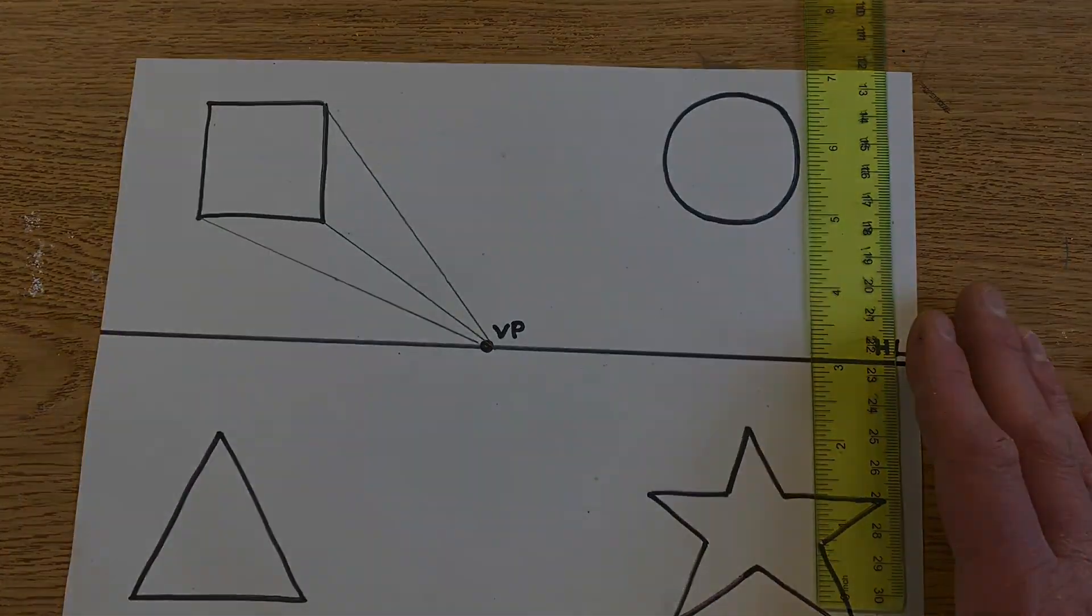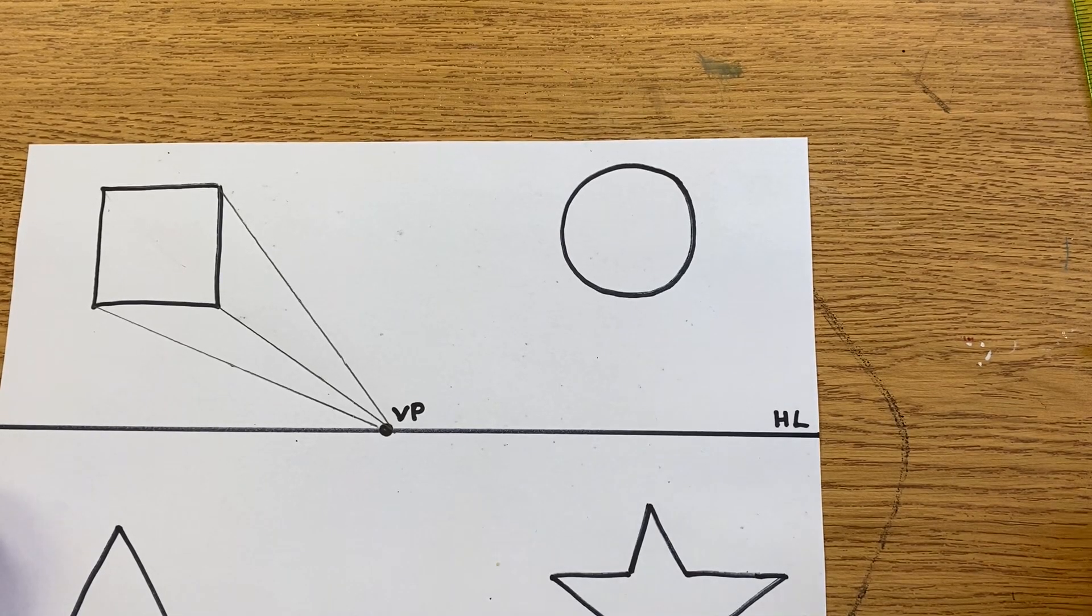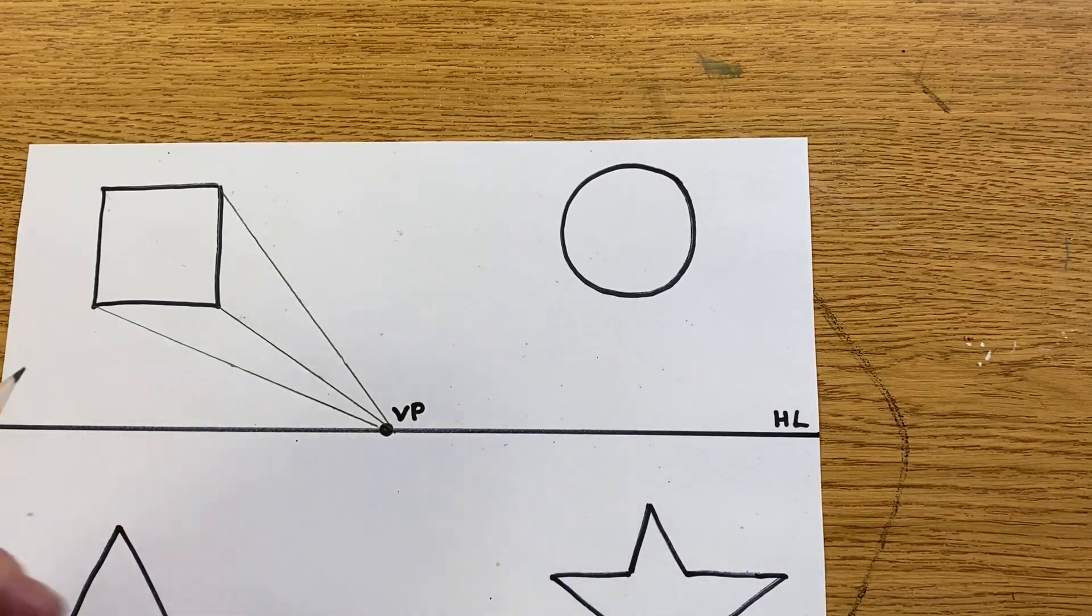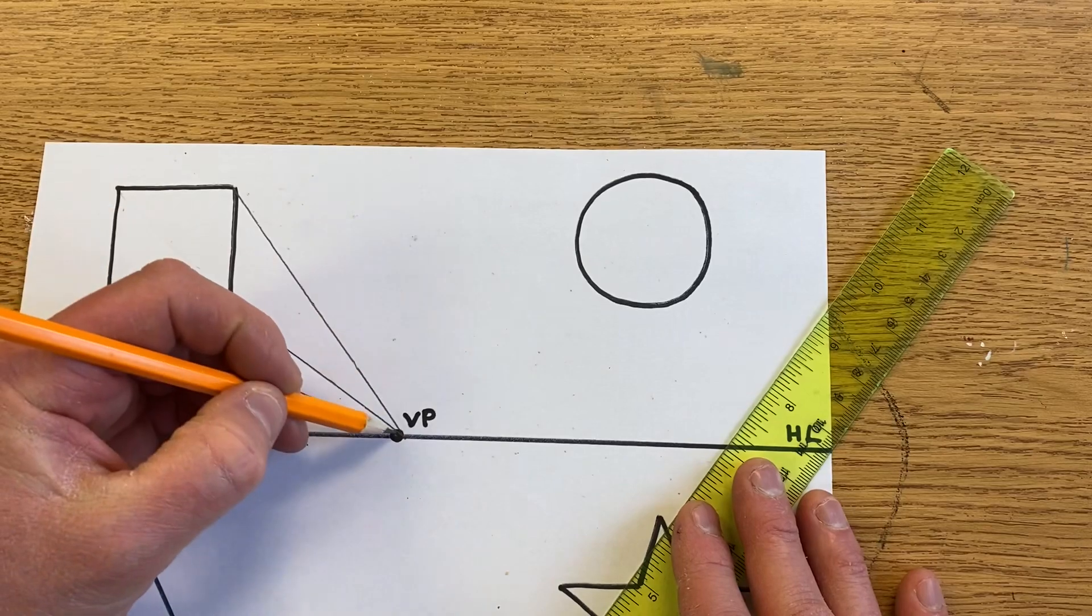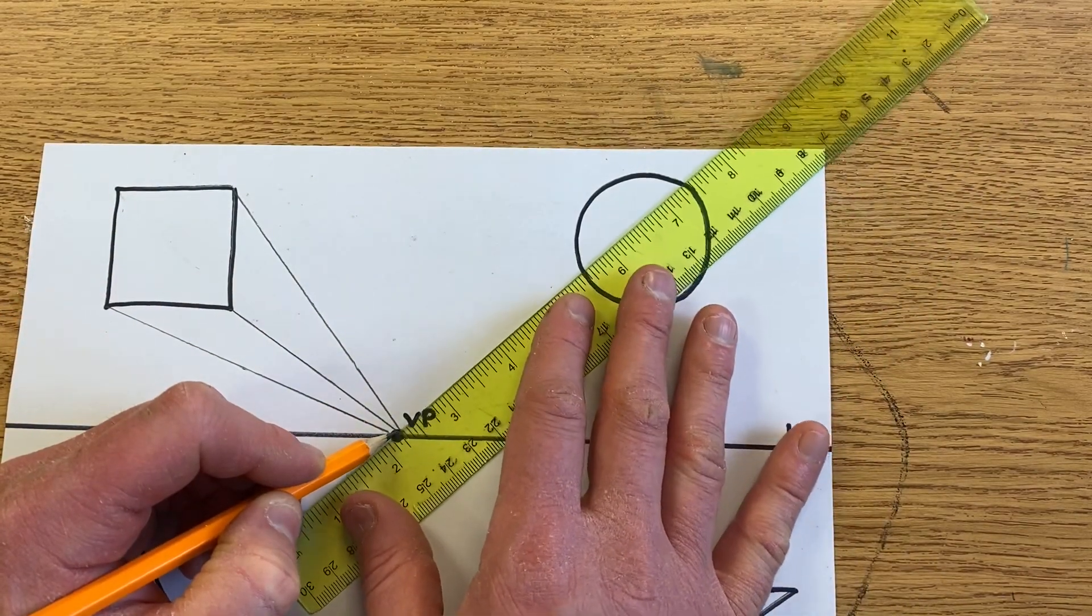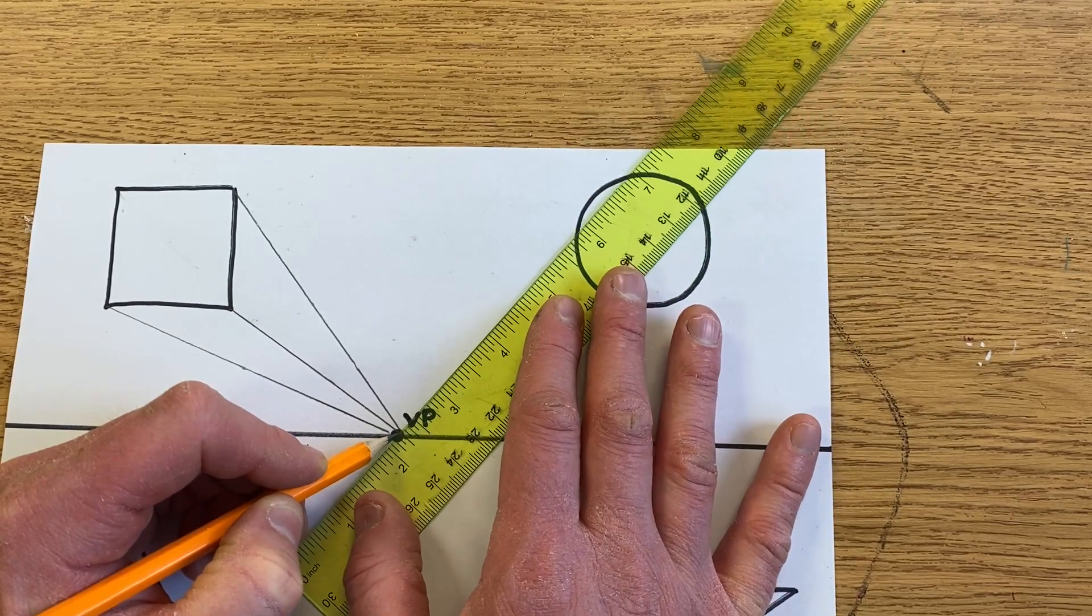The next shape we'll look at is the circle. A lot of people ask how do we do that if there's no corners. What I do is start with my pencil on the vanishing point, bring my ruler over and butt it right up against it, and then take it over.